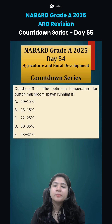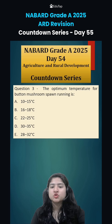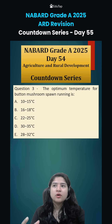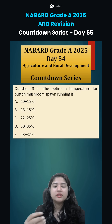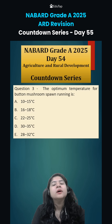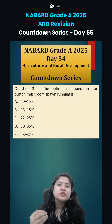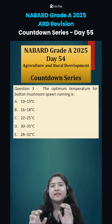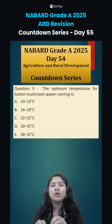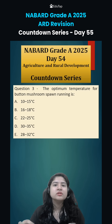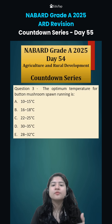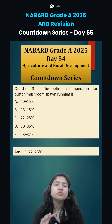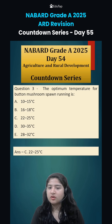Coming to question number three: the optimum temperature for button mushroom spawn running is? Spawn, in layman's language, you can call it seed — just as from a seed a plant is made, from spawn mushrooms are cultivated. Spawn are first mixed with grain and then kept in compost. This spawn has to be spread, and then only the mushrooms will come out. For spawn running, 22 to 25 degree Celsius is considered to be the optimum temperature.